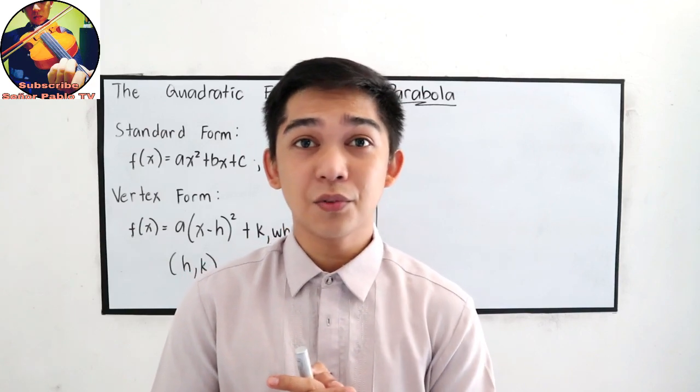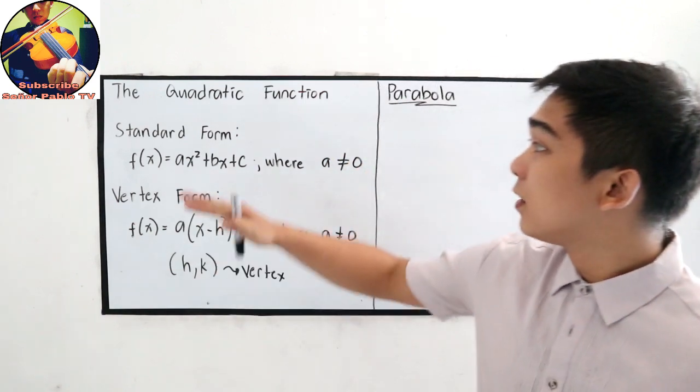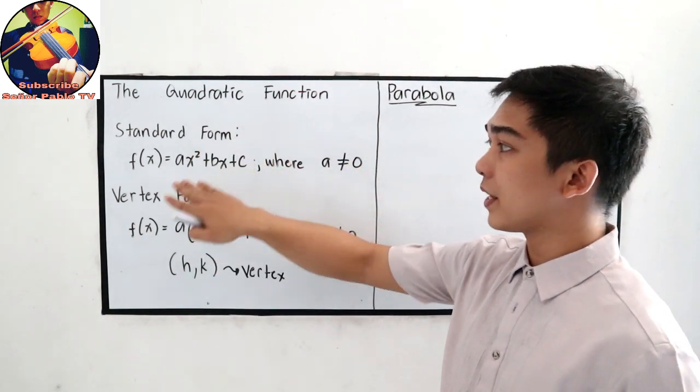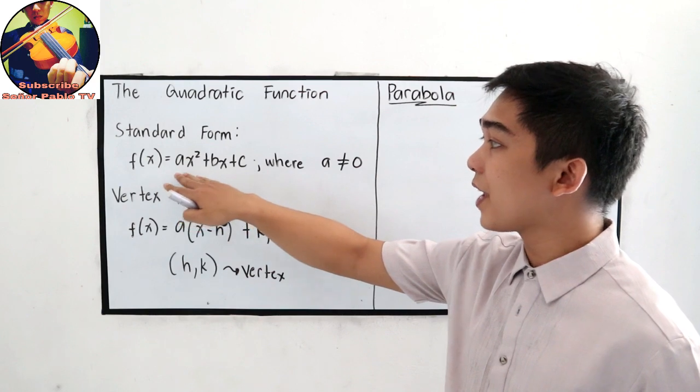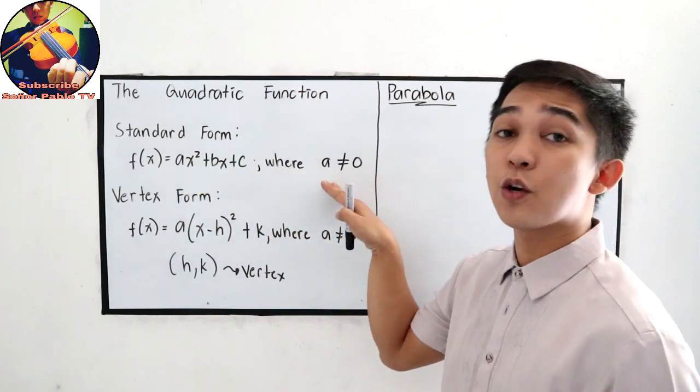And now let's have the introduction for the graph of quadratic function. The standard form is f(x) is equal to ax squared plus bx plus c, where a is not equal to 0.